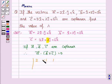The second row is the coefficients of i cap, j cap, and k cap of vector B. So it is 1, 2, 3. And the third row is 3, lambda, 5, and this is equal to zero.